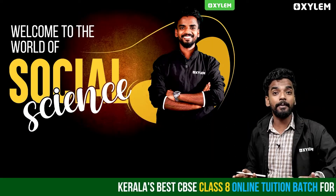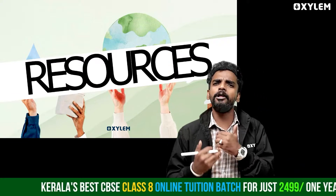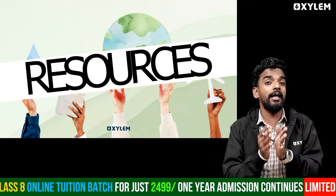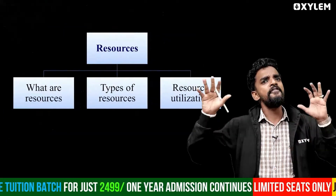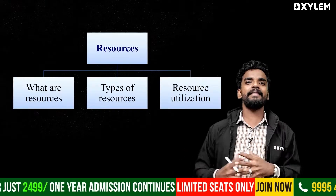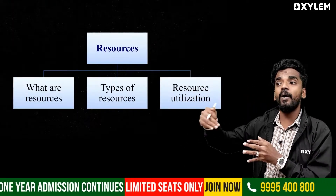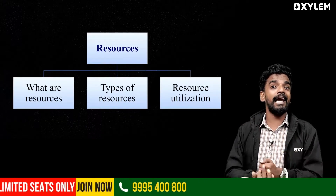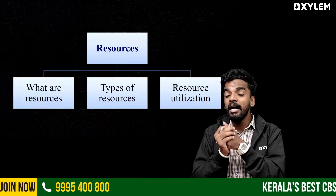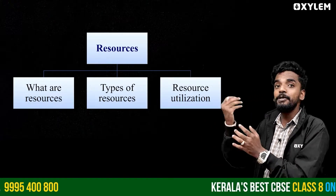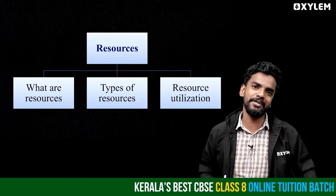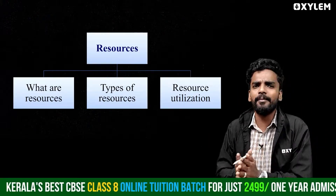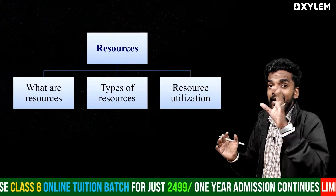There are three parts of this chapter. First, what are resources? Second, we have three different types of resources — what are the types and their details? Third, resource utilization — how resources can be utilized, preserved, and protected. We will discuss all three things.